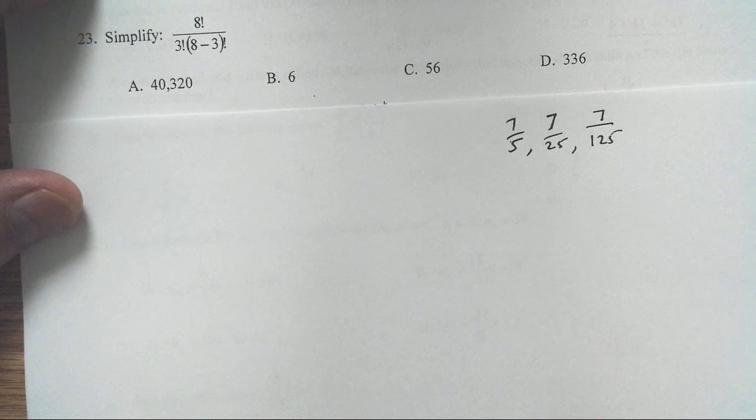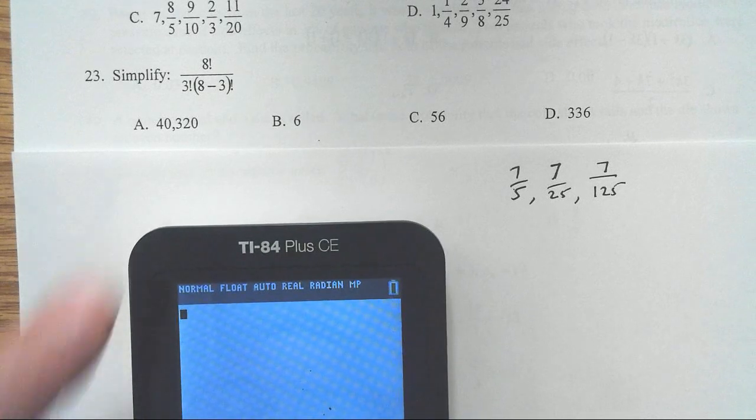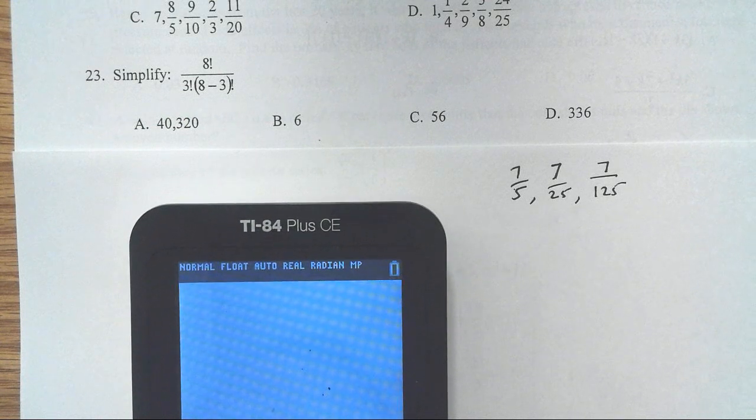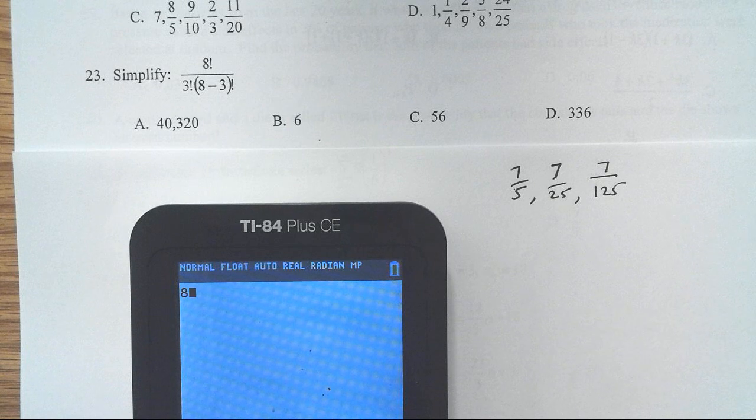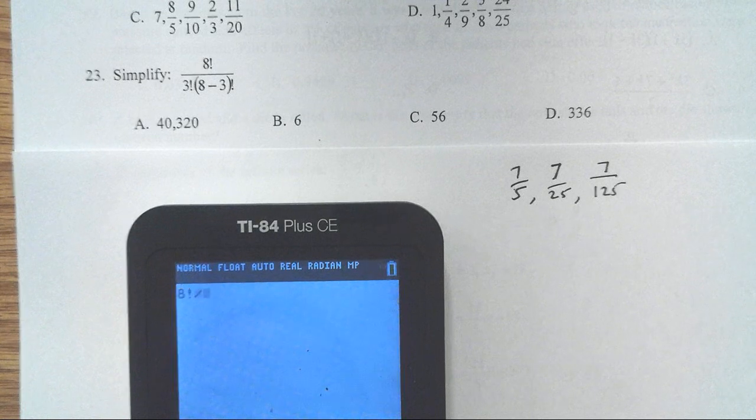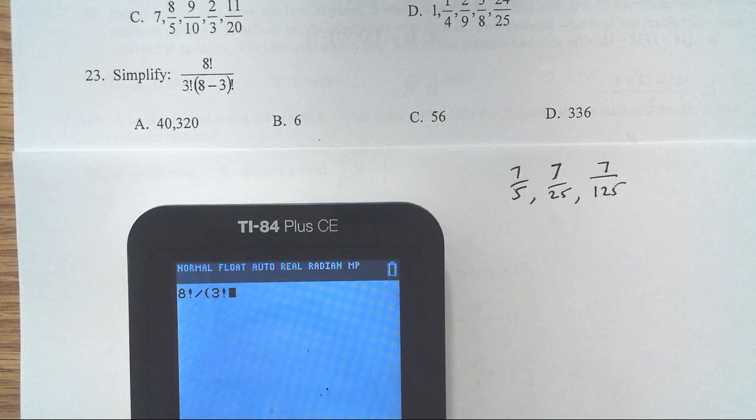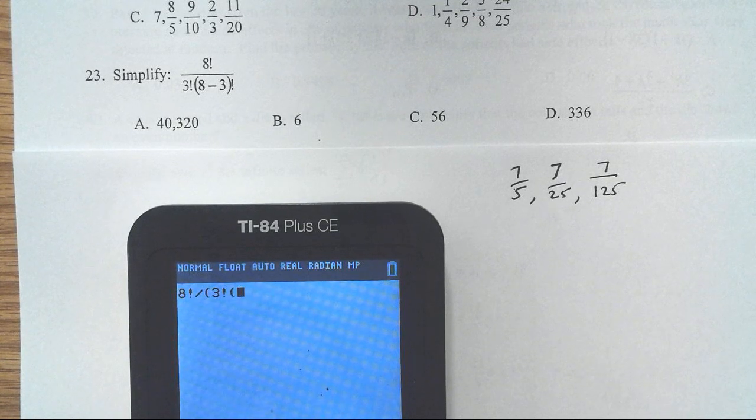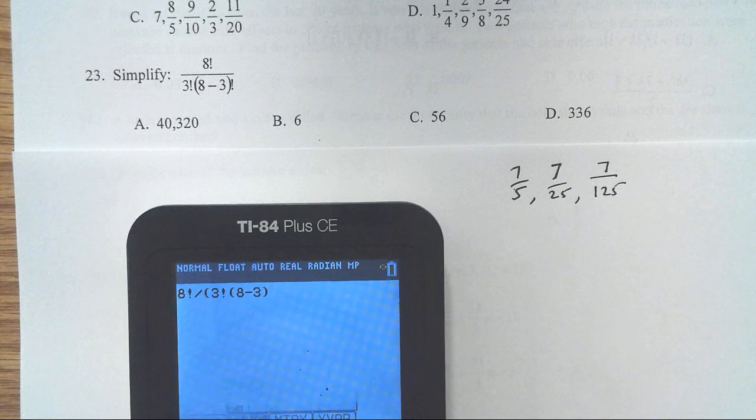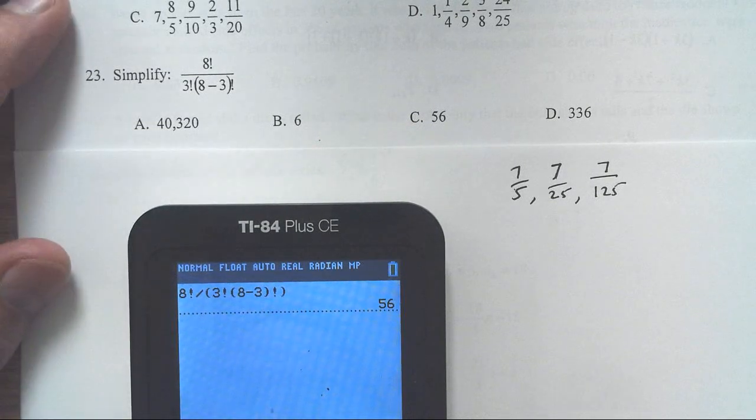You might recognize this is just the kind of drawn out way to write a permutation. You could do it with permutation, or we could just go ahead and go 8 factorial divided by 3 factorial times 8 minus 3 factorial. And notice I wrapped the entire denominator in parentheses. And I've got 56. C.